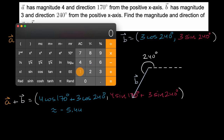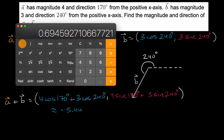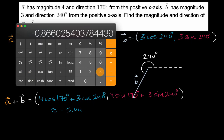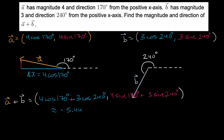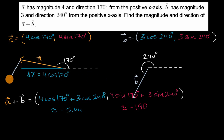Taking sine of 170 degrees times four, plus sine of 240 degrees times three, gives approximately negative 1.90. So the y component is approximately negative 1.90. This is consistent with our intuition — if the sum has both negative components, it's in the third quadrant. Using the head-to-tail method, we can see the resulting vector does sit in the third quadrant.